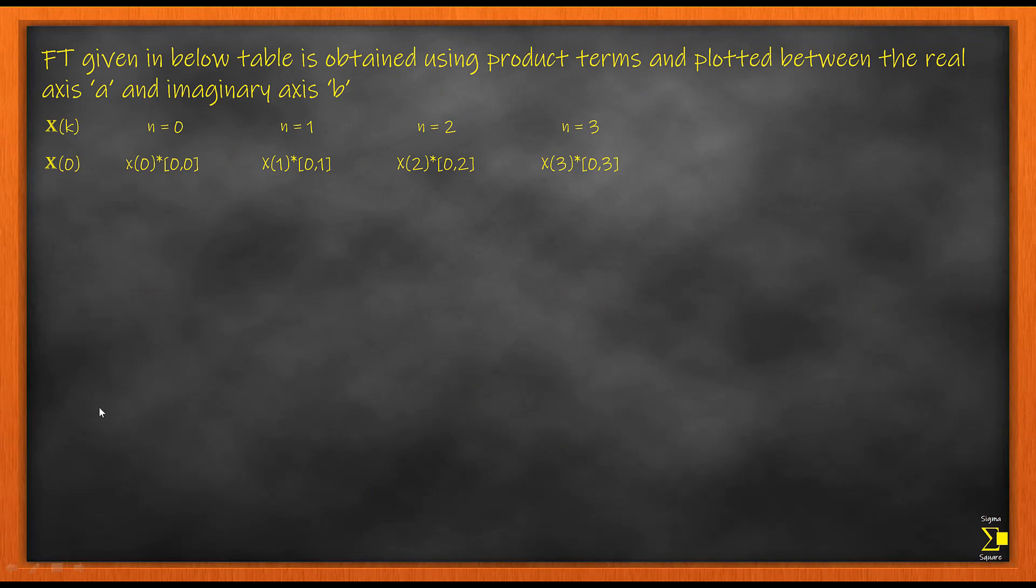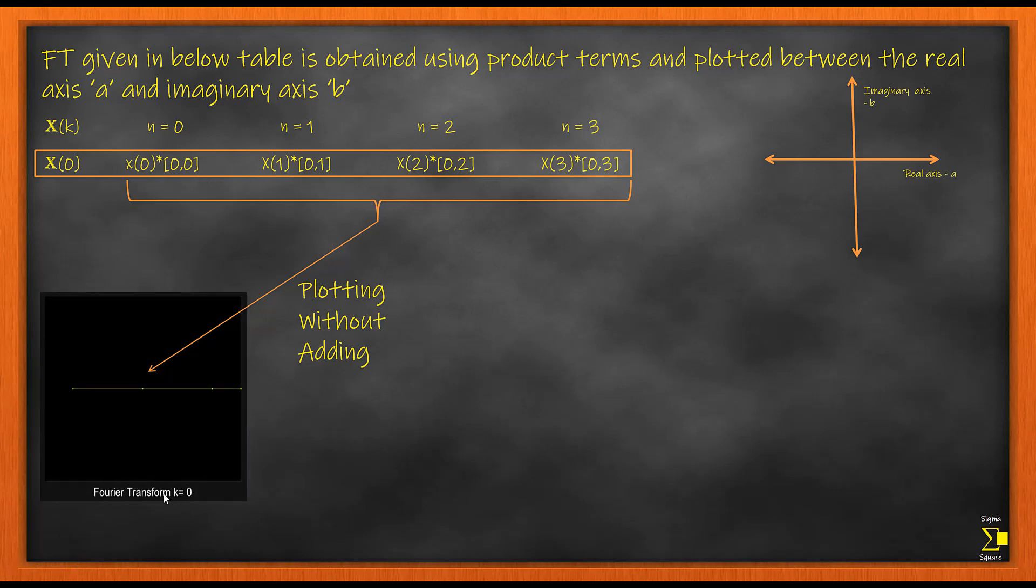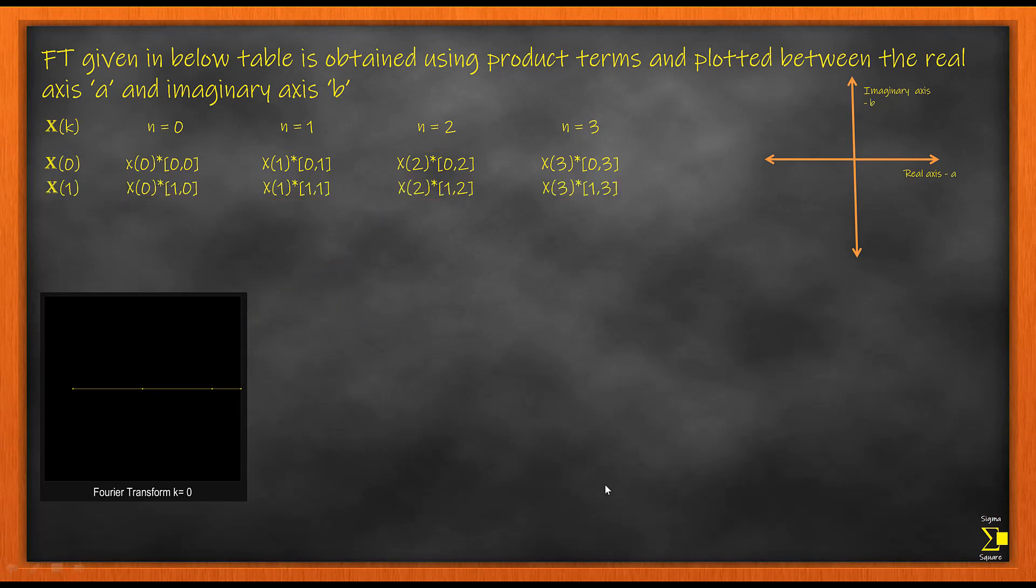Now let's see how this FT looks like when we use only the product terms. When you use only the product terms, the axis you get is a complex graph. You have a real axis and an imaginary axis, and these 4 points are being plotted as your 4 points in this graph.